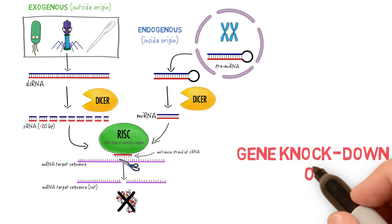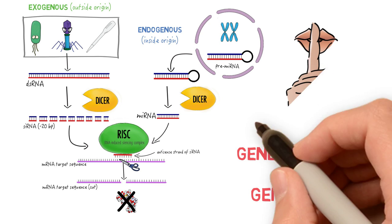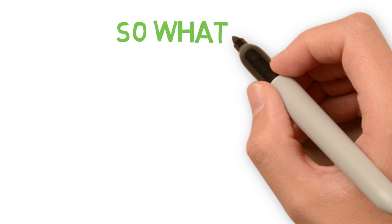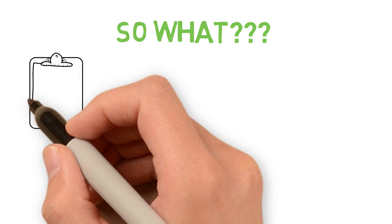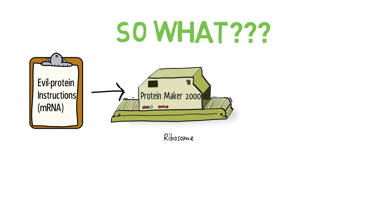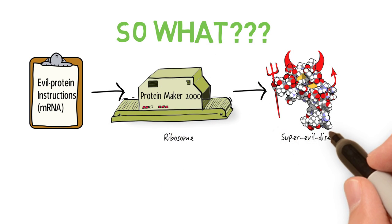RNAi is called gene knockdown, or gene silencing, stopping the gene from being expressed. So what does this all mean? Well, many disease treatments are currently trying to block proteins of the disease from working after they have already been made. But what if we could reduce the amount of bad proteins before they are ever made?